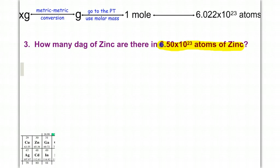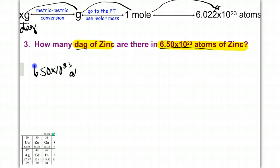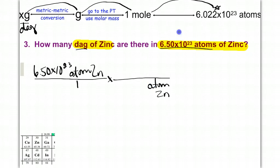We're given 6.50 times 10 to the 23rd atoms of zinc, and we're asked to find decagrams of zinc. Starting at atoms, we go from atoms to decagram — that's all the way on the left at x-gram. The plan: atoms to mole, mole to gram, then grams to decagram. Put 6.50 times 10 to the 23rd atoms of zinc over 1. Bring down atoms of zinc, and use Avogadro's number — 6.022 times 10 to the 23rd — to convert from atoms to one mole.